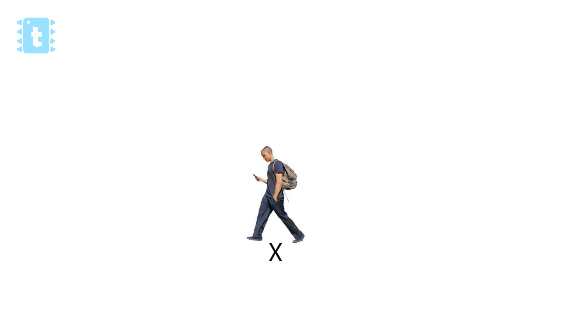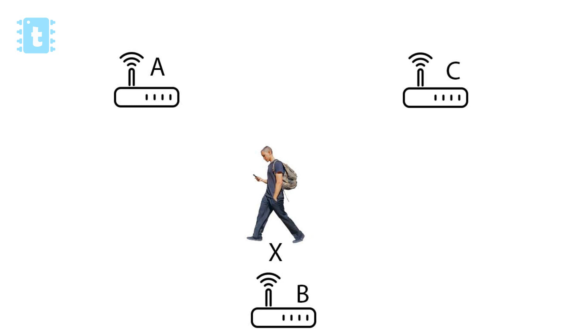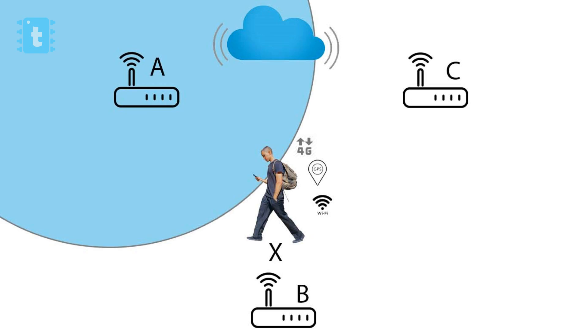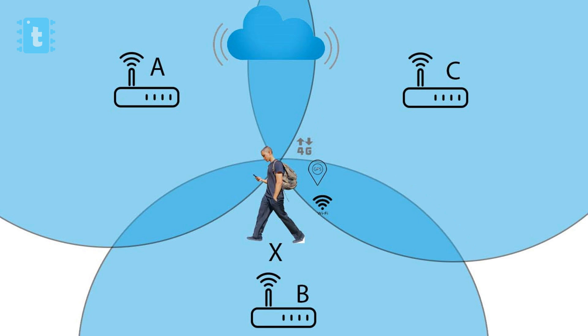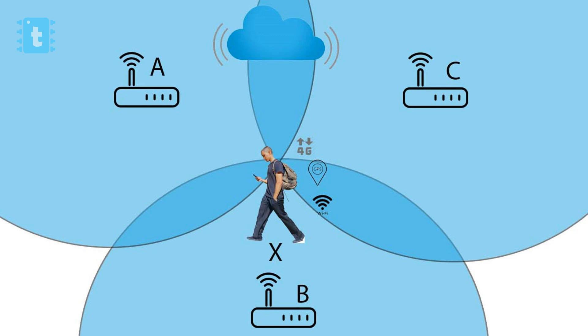Let me clear this up with an animation. Suppose there is a Person X surrounded by three Wi-Fi routers A, B, and C. Person X has a smartphone with Wi-Fi, GPS, and internet enabled. What Google does is have the phone scan the SSID names, MAC addresses, and received signal strength of all routers A, B, and C. It estimates their location based on the phone's GPS position and signal strength, then saves this data to Google's database. Now Google knows the approximate location of all three routers.